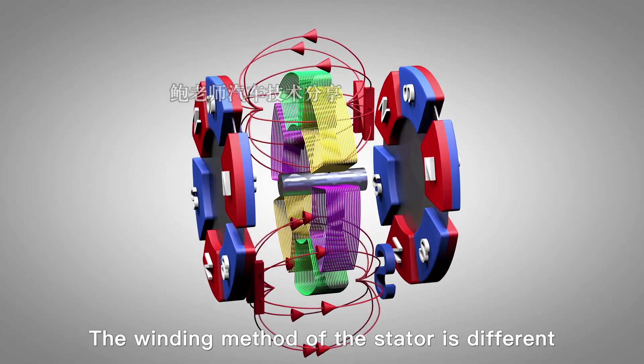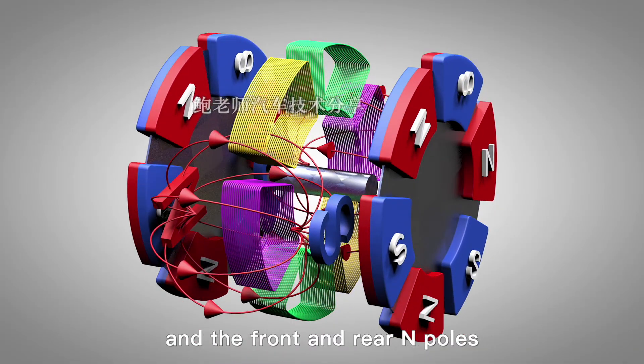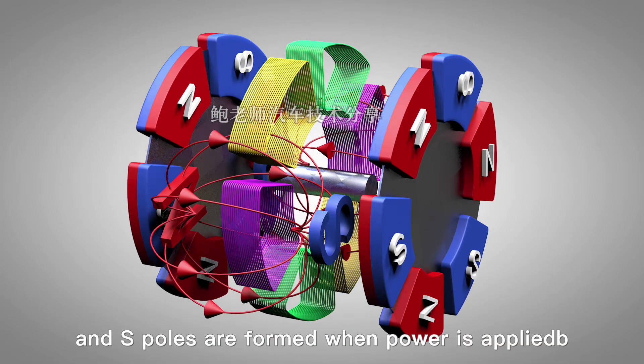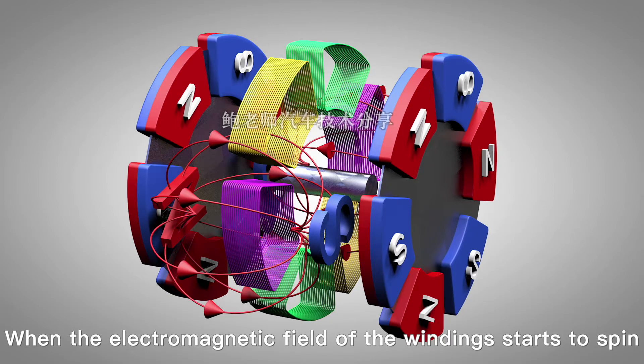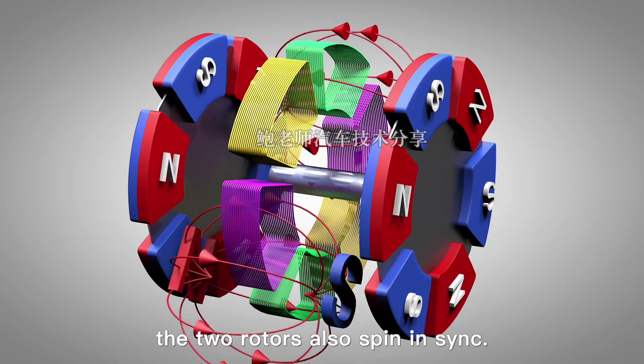The winding method of the stator is different from that of traditional motors, and the front and rear end N poles and S poles are formed when power is applied. When the electromagnetic field of the windings starts to spin, the two rotors also spin in sync.